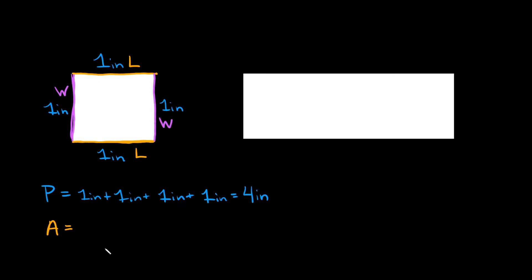And the way you find the area of a square like this would just be by multiplying the length times the width. So in this case the length would be one inch and then we would multiply that by the width which is also one inch. So what's one inch times one inch? Well that would be equal to one inch squared.